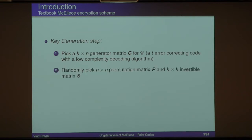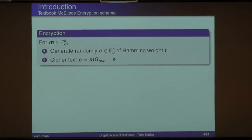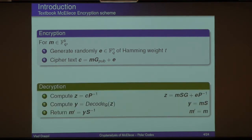We scramble this code by multiplying to the left — changing the basis — and on the right with a permutation of the columns. This is the original scrambling technique. So the public matrix is SGP and the private key consists of the three components S, G, and P. Encryption: encode your message and add some errors. To decrypt, use P and S and the decoding algorithm to retrieve your message. This is the original scheme, and most variants look like that.